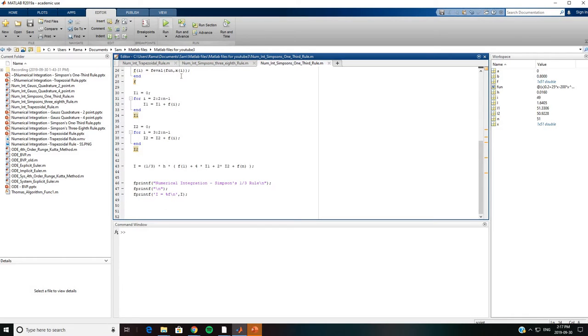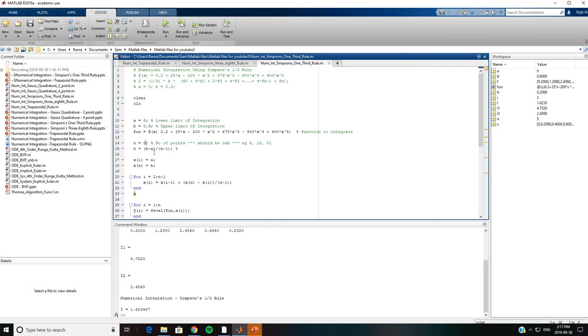We run this case and obtain a value of 1.623467, which is pretty close to the accurate value or exact value of 1.64 we obtained analytically. Now we can increase the number of segments to say 25 and run it again.